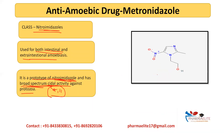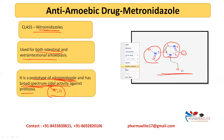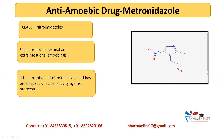Let's see the structure of metronidazole. This is the imidazole ring — a 5-membered ring with two nitrogens at the first and third positions. At the second position we see a methyl group (CH3). At the fifth position there is a nitro group (NO2). At the nitrogen, an ethanol group (–CH2CH2OH) is attached. So the structure contains a methyl group, a nitro group, an imidazole ring, and an ethanol group.